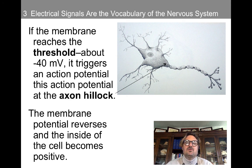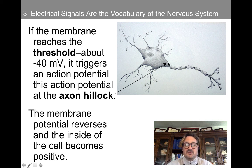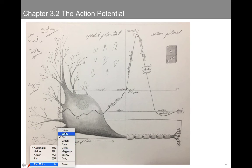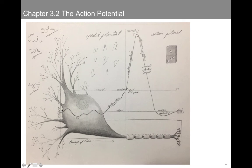If the membrane reaches the threshold of about negative 40 millivolts, it triggers an action potential. This action potential begins at the axon hillock — this cone-shaped area. The membrane potential reverses whenever this happens, and the inside of the cell becomes positive. You probably recall this diagram: the charge of the intracellular space is constantly going up and down, depolarizing. If it depolarizes to negative 40 millivolts, that's when we're going to see the action potential.